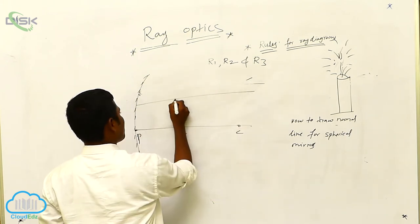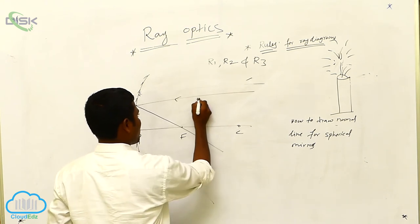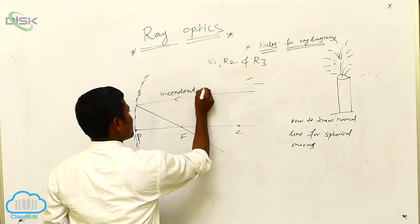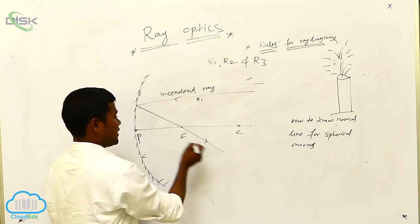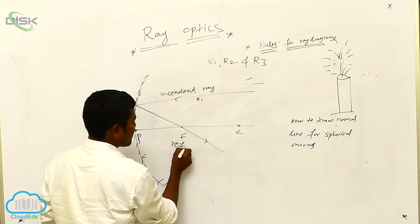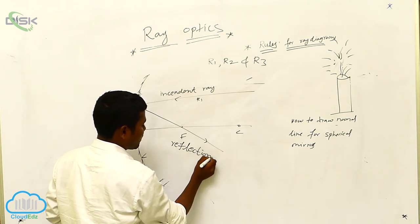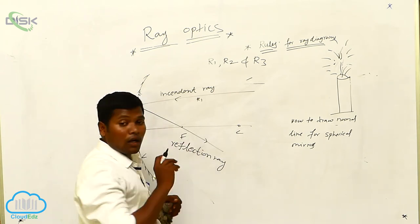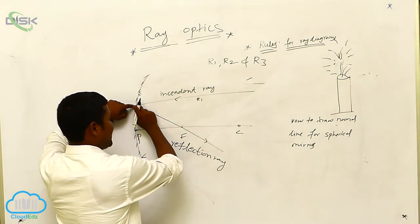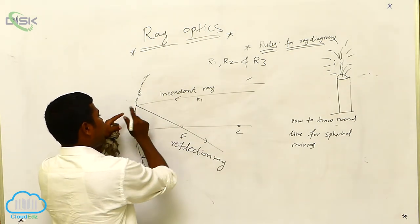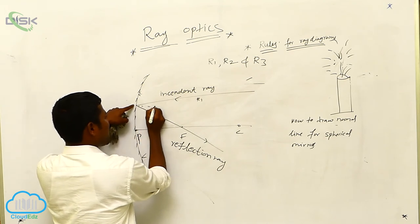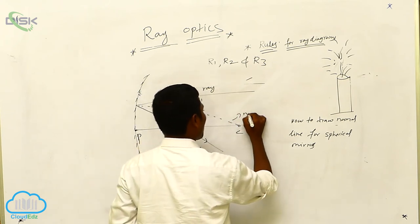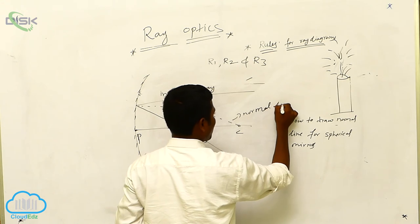Now I consider R1. It is passing through the focus. This is R1 — this is the incident ray. After striking on the mirror, it is going back — that's why we are calling this the reflection ray. So now what I am going to do — I have to draw a normal line where this incident ray is ending and where the reflection ray is starting. At that point, you have to draw with dotted lines towards C. These lines we are calling the normal line.